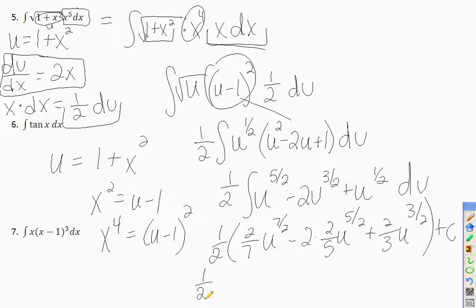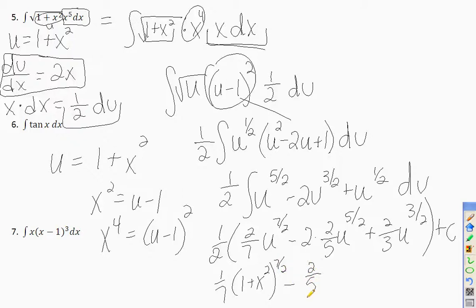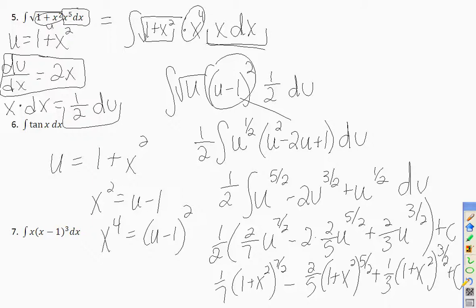Distribute the 1/2: 1/2 times 2/7 is 1/7, 1/2 times 2/5 is 1/5 (giving minus 2/5 before distributing), and 1/3. Plugging u = 1 plus x squared back in: 1/7(1+x²)^(7/2) minus 2/5(1+x²)^(5/2) plus 1/3(1+x²)^(3/2) plus C. That's the hardest case — when you have an extra x to a power, you need that clever substitution.